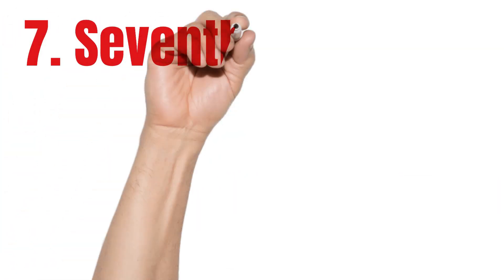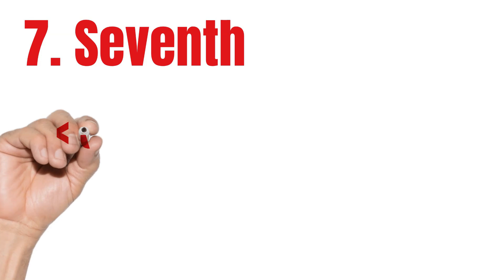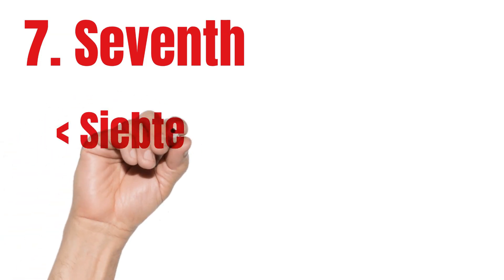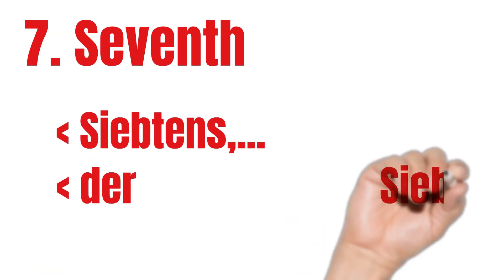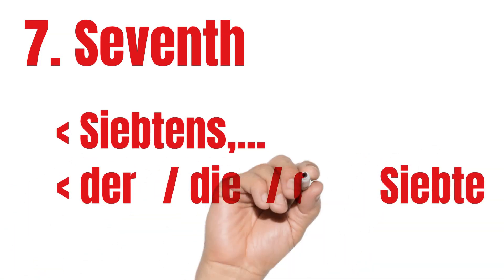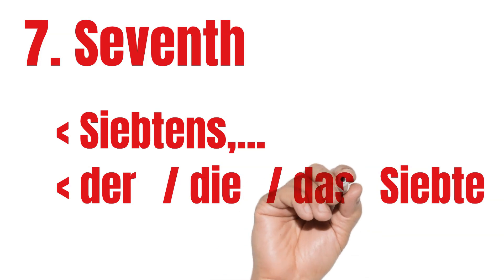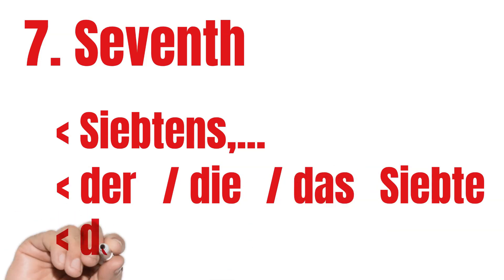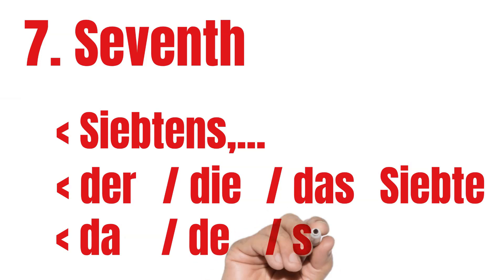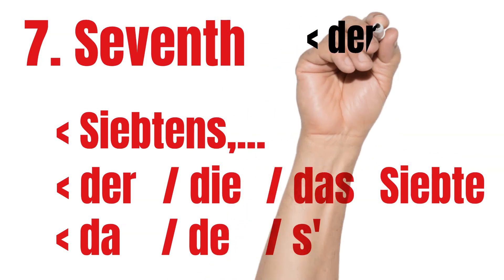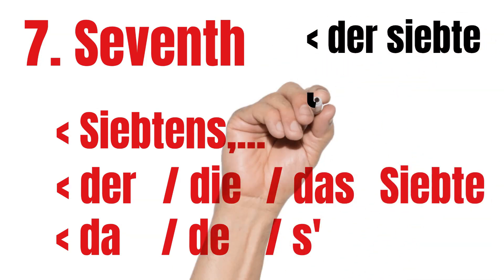Seventh. For numbered lists, seventh means Siebtens. With articles: der Siebte, die Siebte, das Siebte. In Austrian German: der Siebte, die Siebte. And if you want to talk about the months, the 7th of July is der Siebte Juli.